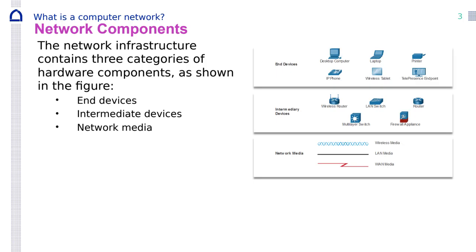So these are the network components. The network infrastructure has three categories of hardware and devices: end devices, intermediary devices such as routers and access points and switches and firewalls, and then the media — cable, transmission, wireless.